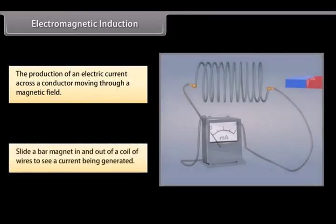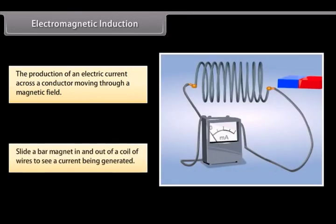Let us try sliding a bar magnet in and out of a coil of wires. You see that the wires generate a current. This is known as electromagnetic induction.